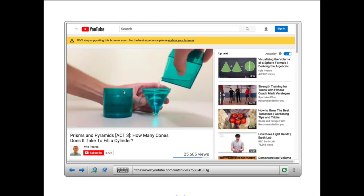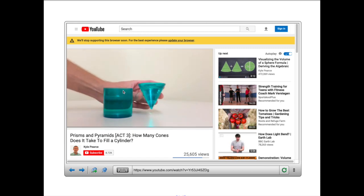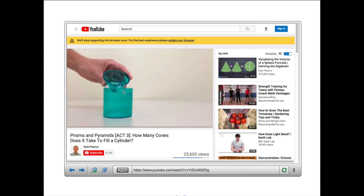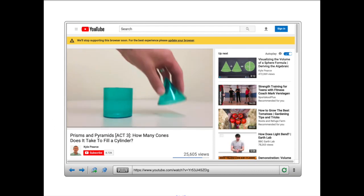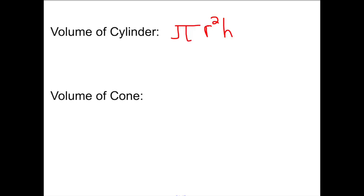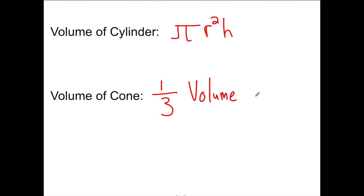That's two times — and three times. How could we use this to find the volume of a cone? How many times did we have to fill up the cone and pour it into the cylinder until the cylinder was full? Three times. So that means the volume of a cone is equal to a third of the volume of a cylinder.